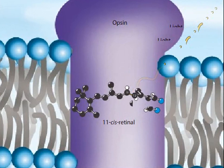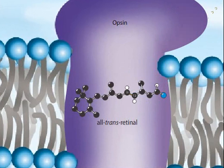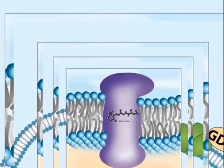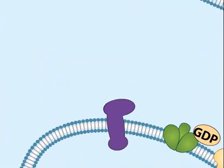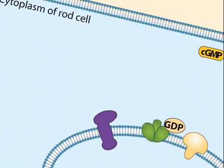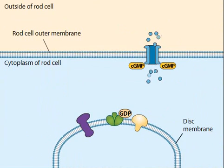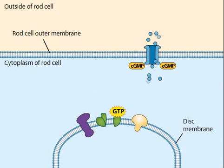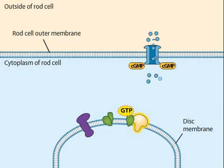the molecule rotates around an internal bond, straightening out, and becomes all-trans-retinal. The shift in retinal forces a conformational change in the opsin that signals the detection of light. The photoexcited rhodopsin activates transducin by stimulating it to release GDP and pick up GTP. Activated transducin, in turn, activates phosphodiesterase.